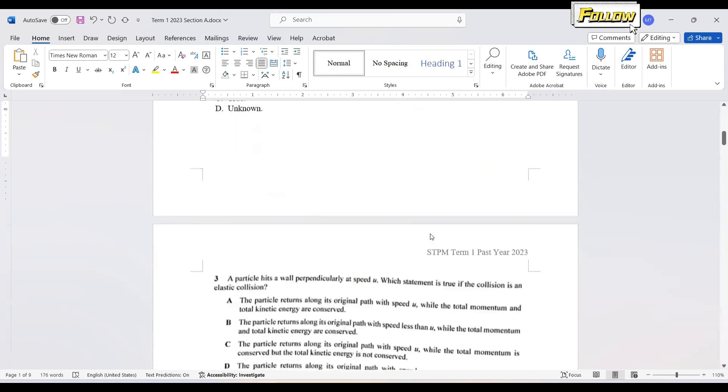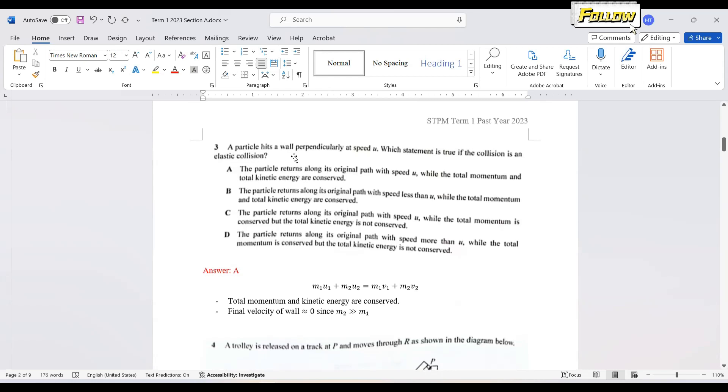Either the car is moving or stopped, we can actually look at the value of the displacement. The car is stopped when the line is a horizontal line and it is moving, it is going up or down. So we move on to question number 3. The particle hits a wall perpendicularly at speed u, which statement is true if it is an elastic collision? We need to review back the definition about the elastic collision.